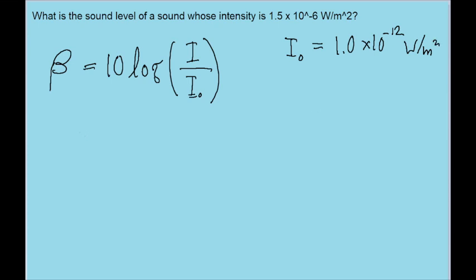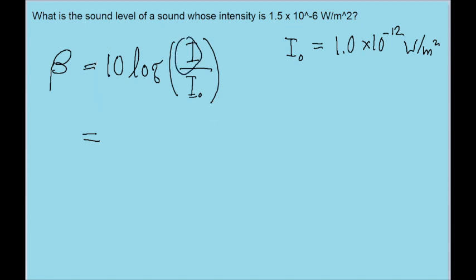So all we have to do for this problem is take this formula, put in the constant I just mentioned for I-naught, and for this I right here, we just use the given intensity. And just remember that the logarithm function that you're using has a base of 10. So you just plug this into your calculator, and you should find a sound level of about 61.76 decibels.